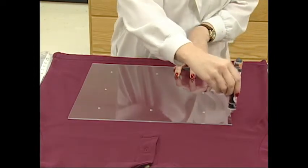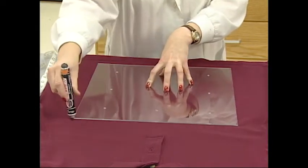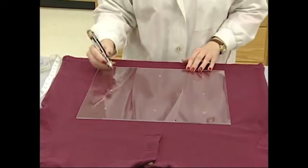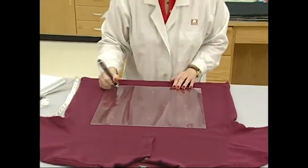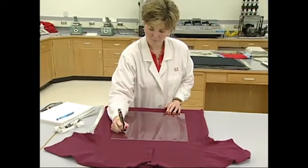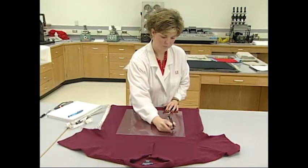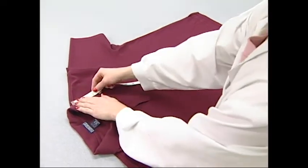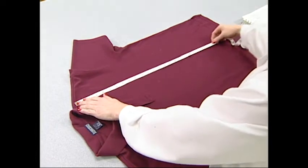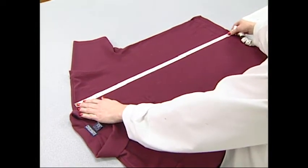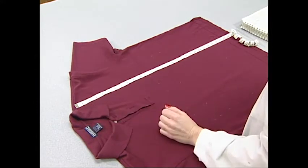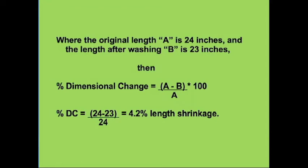If the length of the garment allows for it, 15 inch benchmarks may be placed on the front or back of the shirt starting above the hem and just below the neck. If the size of the shirt prohibits a 15 inch mark, then a 10 inch mark can be used. After laundering and conditioning, the shirts are again laid on a table and the same benchmarks are measured. To determine the shrinkage, the length of the washed condition for each measurement site is subtracted from the original length, divided by the original length, and multiplied by 100 to give the percentage.